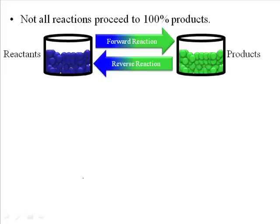We still refer to the chemicals on the left side as reactants and the ones on the right side as products, but now you can actually start or end in either place. What complicates this is we now have to have a different understanding of what exactly will be contained in a reaction vessel if we mix all the reactants together.